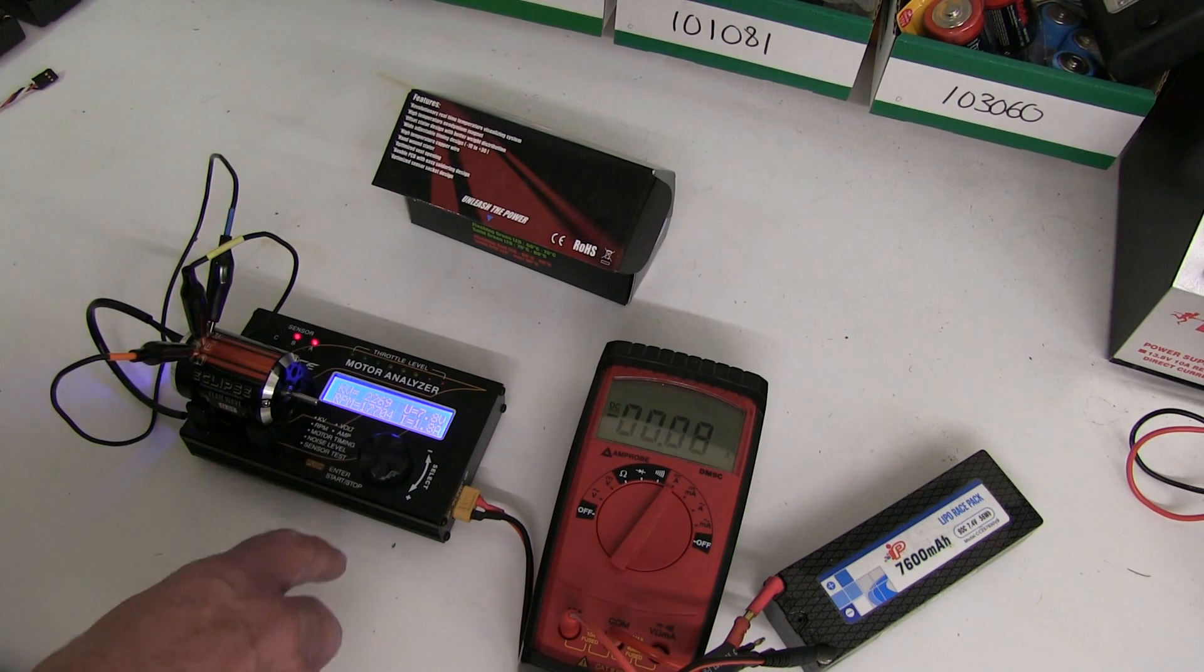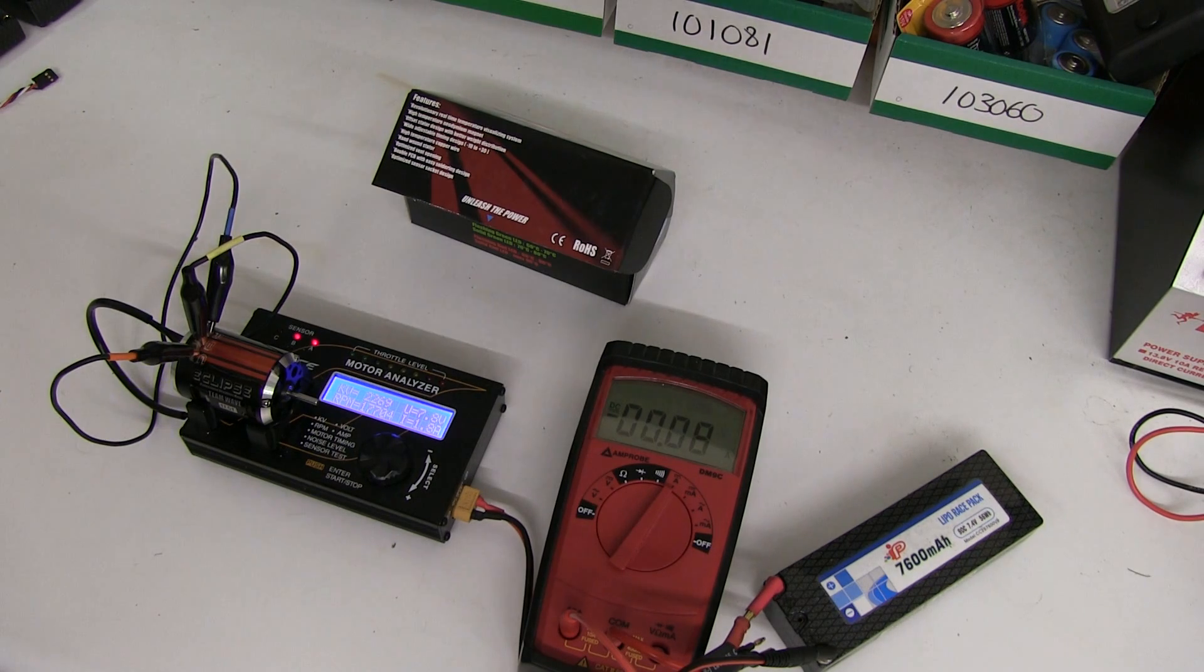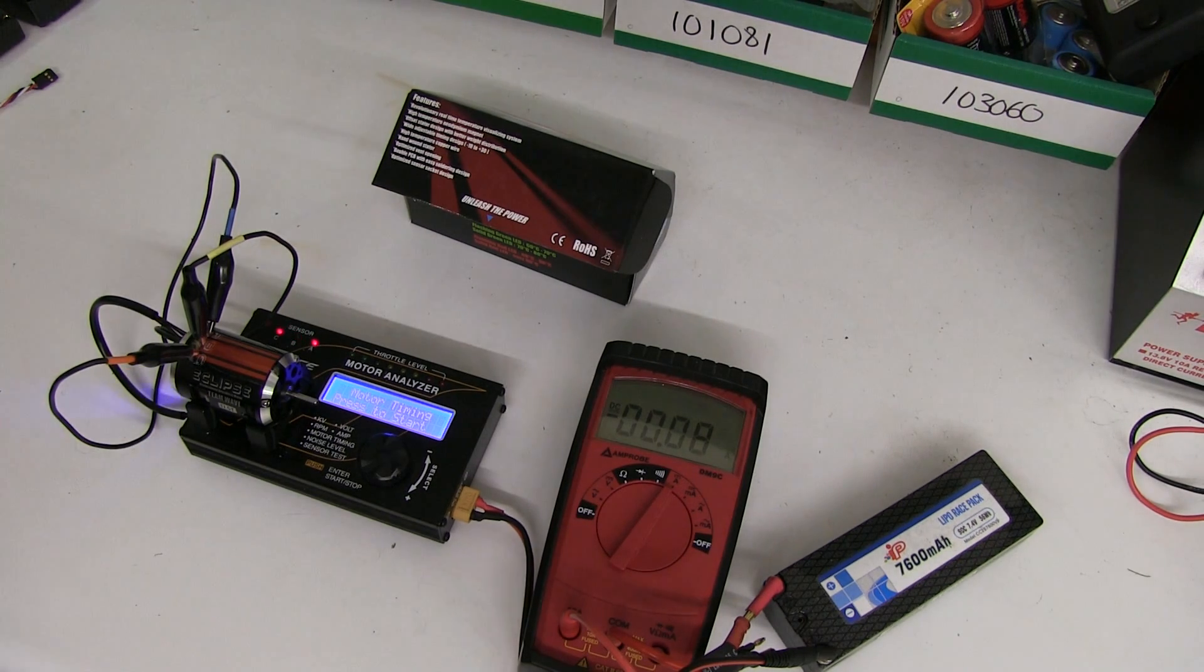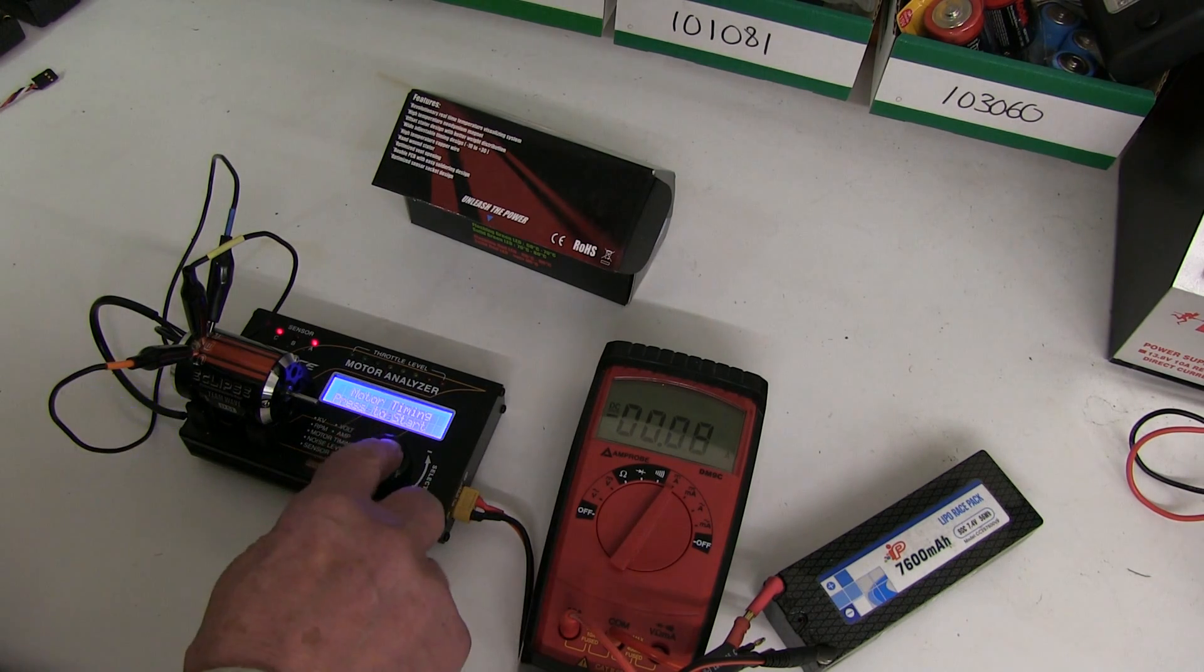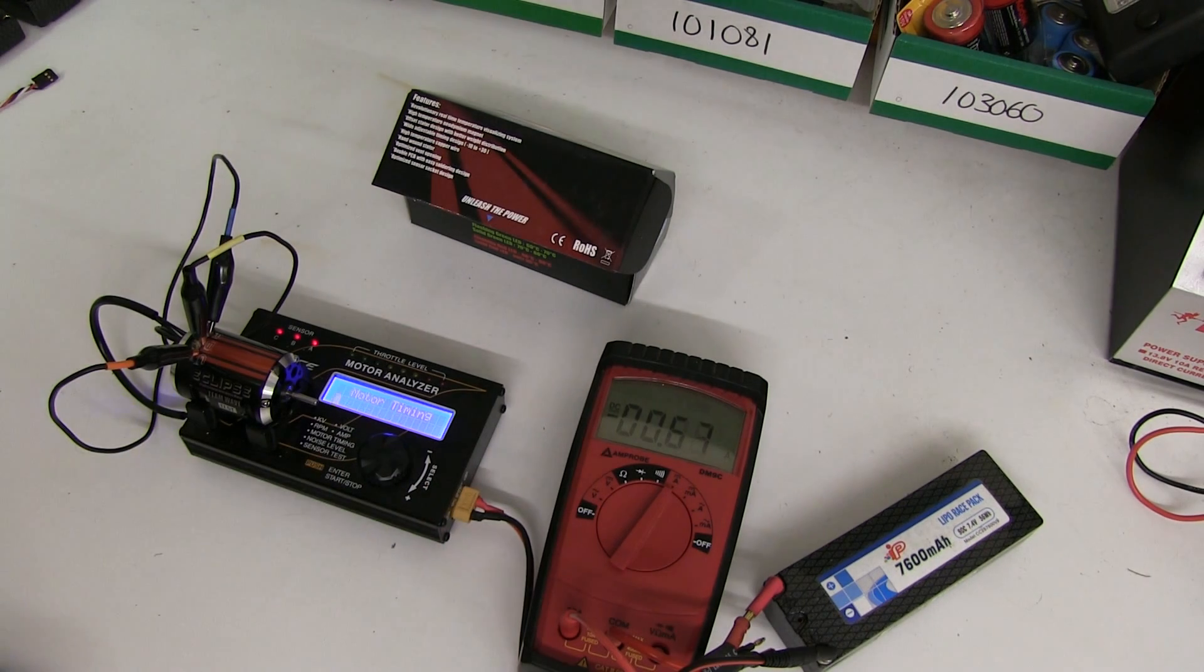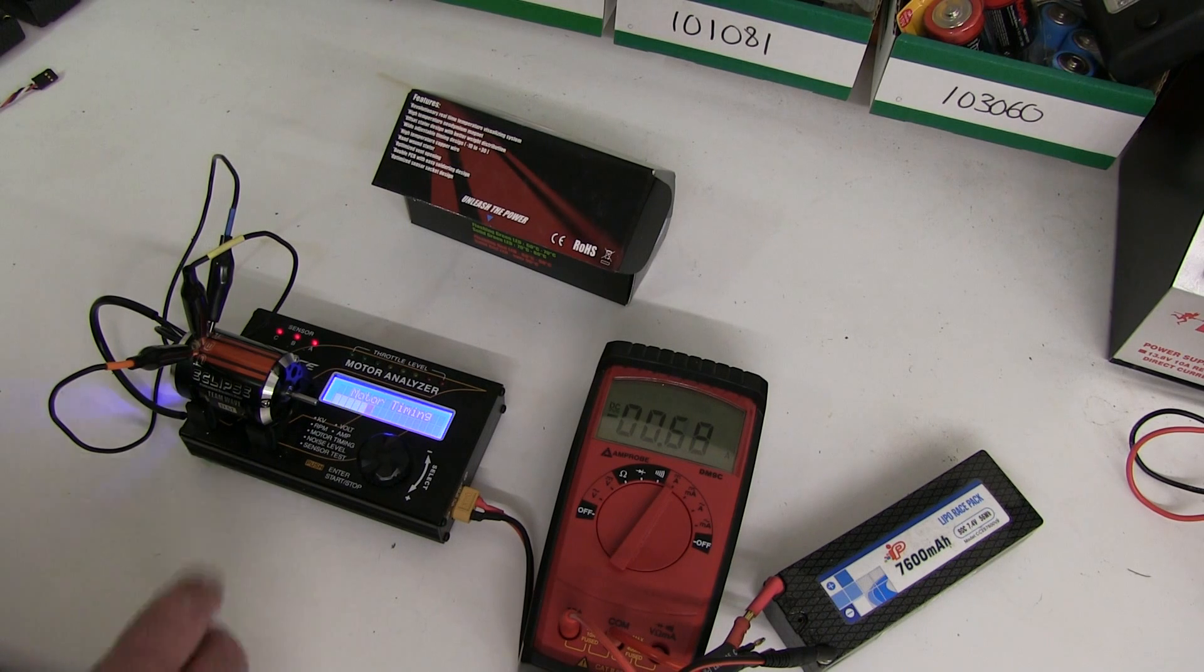I've adjusted the timing on the endbell of this motor. The Team Wave just has a little window in the end that goes 0, 1, 2, so you don't know how many degrees and it's all a bit of a guess. But I've set it now, this one's got 2 in the window and I'll just show the timing. You do this test offload.